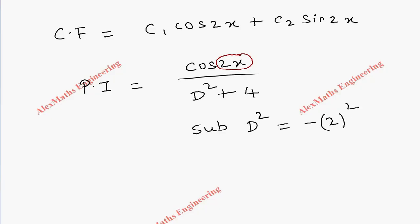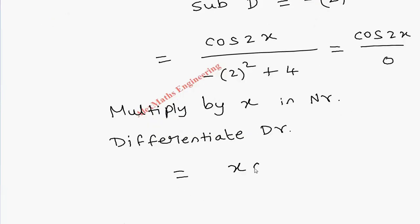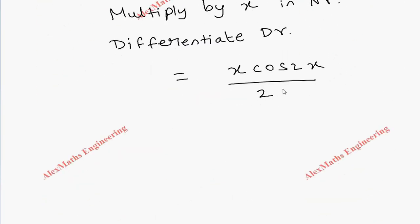The minus sign is common. So numerator will be as it is, cos 2x divided by minus of 2 whole square plus 4. This gives denominator 0. When denominator is 0, we have to multiply by x in numerator and differentiate the denominator. So that gives us x into cos 2x and differentiation of D² + 4 is 2D.